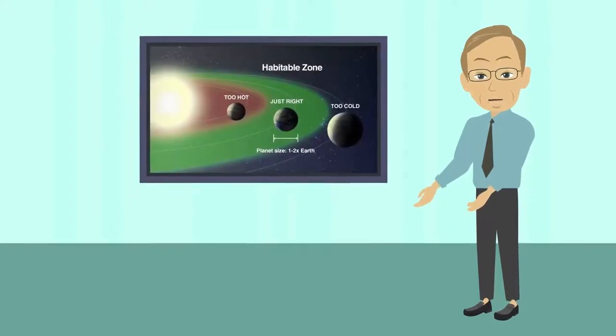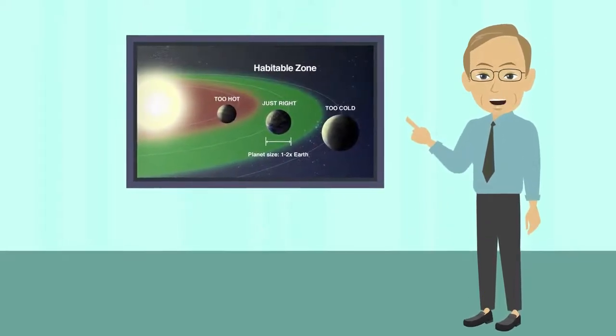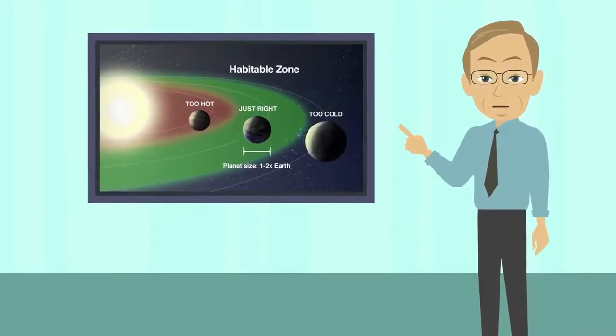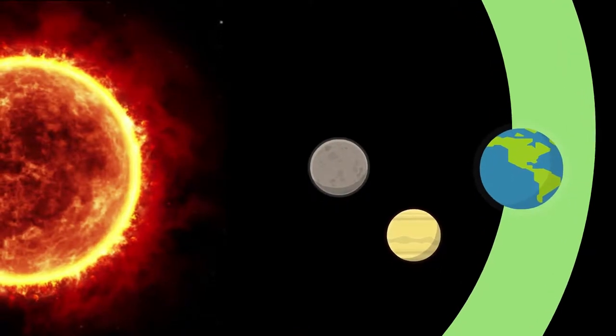The habitable zone, where liquid water can reside on a planet's surface, currently is between about 0.95 and 1.37 times the circumference of the Earth's orbit. That zone will continue to expand outward.